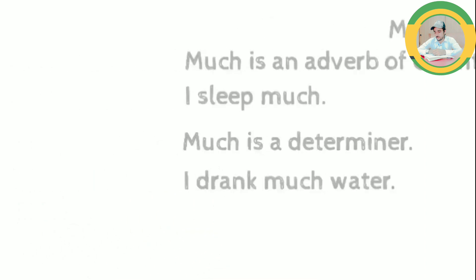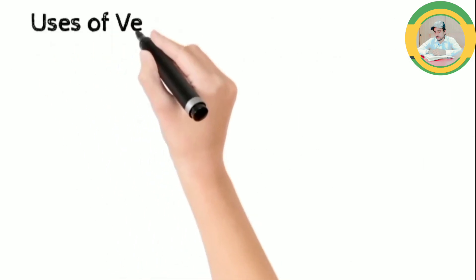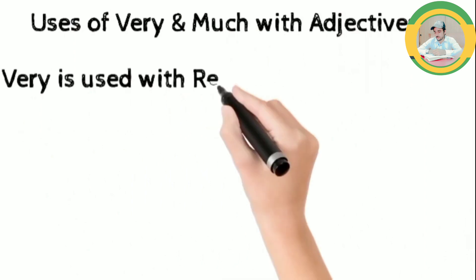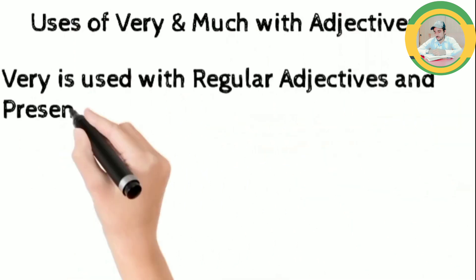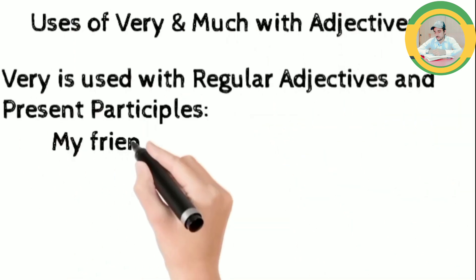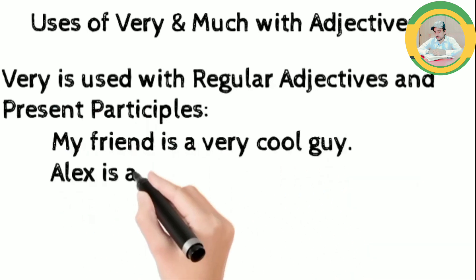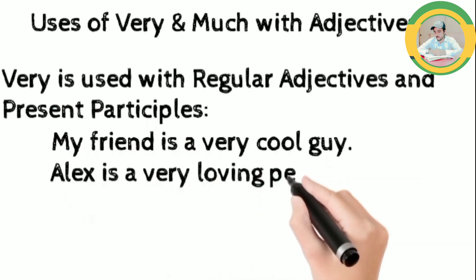Now we see the uses of very and much with adjectives. Very is used with regular adjectives and present participles. For example, my friend is a very cool guy. Alex is a very annoying person.